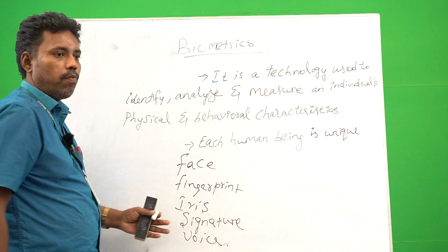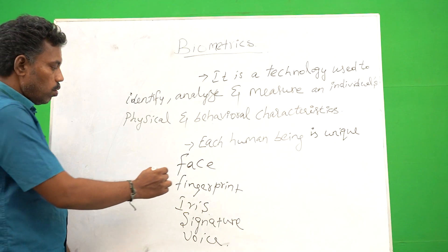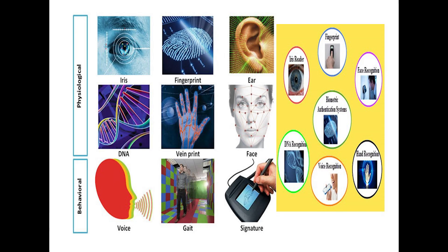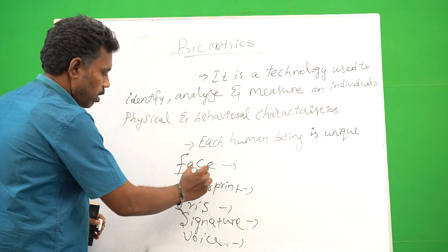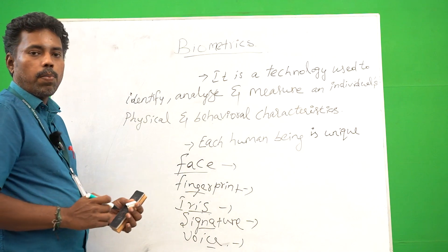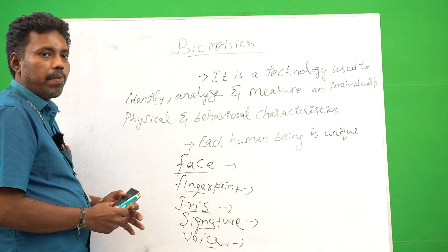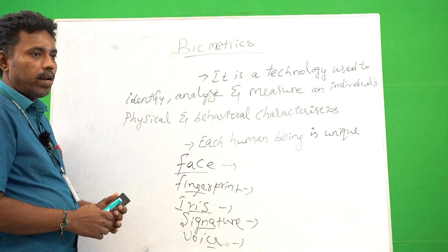So some of these, only a few, we are going to discuss. These are all unique identifications in our human being. Based on these, we are going to identify each person and make security.